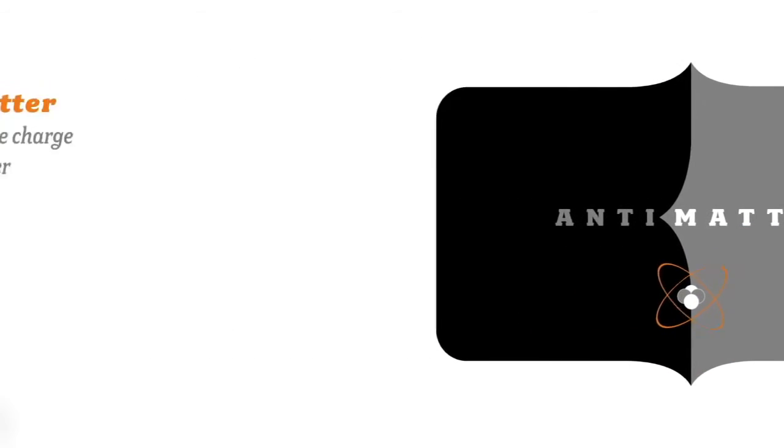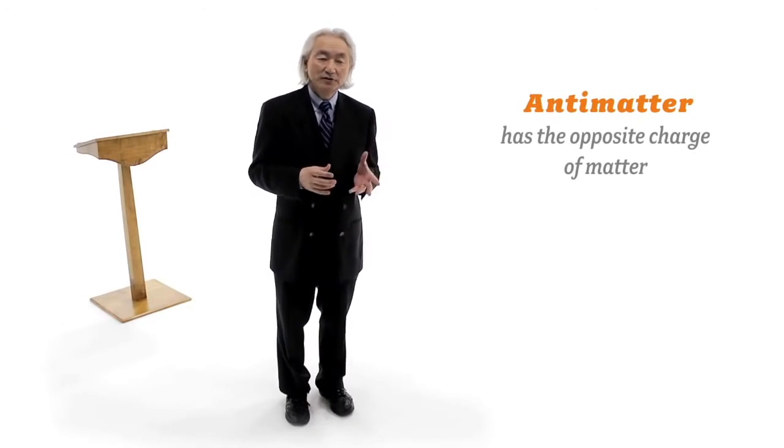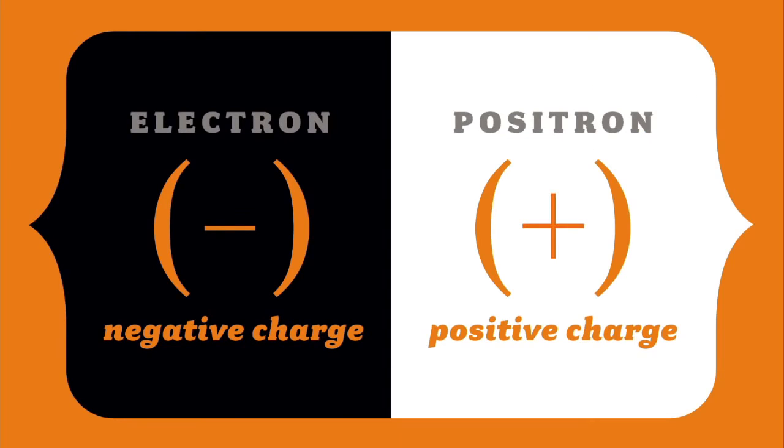Antimatter is the opposite of matter. It has the opposite charge. So an electron has negative charge. The positron or anti-electron has positive charge.